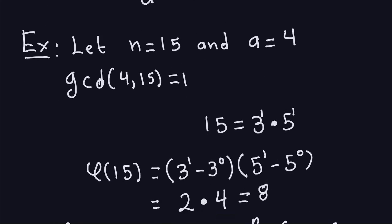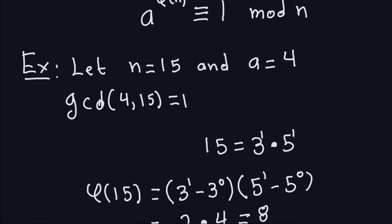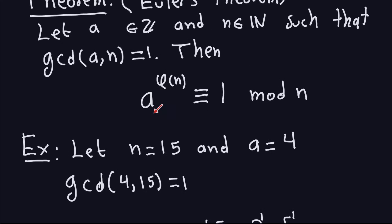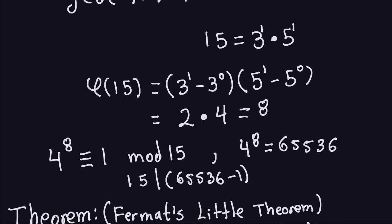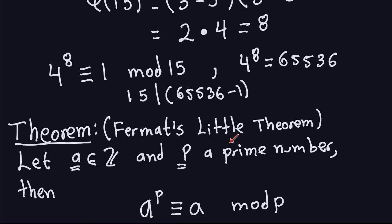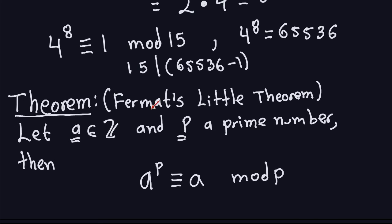That's an example of Euler's theorem. This theorem is true whenever a and n do not have any common factors. If they do, the theorem is not necessarily true. Now let's look at another important theorem: Fermat's Little Theorem. You might have heard the Fermat name before in connection with Fermat's Last Theorem, but this is the Little Fermat theorem.